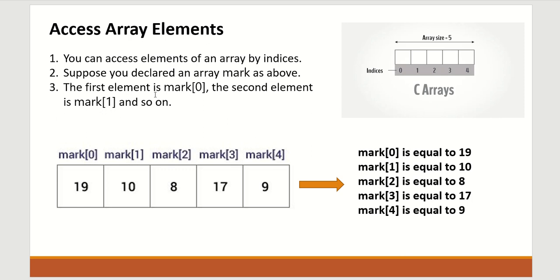The first element is mark[0] — while speaking we say 'mark of zero.' The second element is mark[1], and so on. So mark[0] equals 19, mark[1] equals 10, mark[2] equals 8, mark[3] equals 17, and mark[4] equals 9. This is how you can access your array elements.